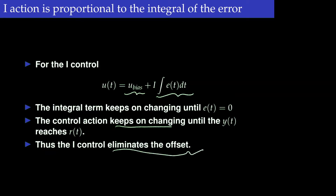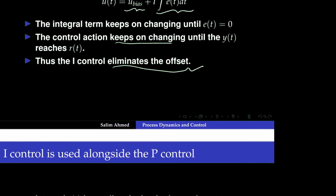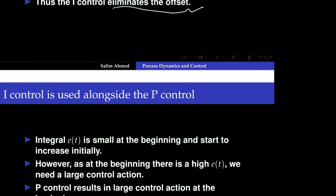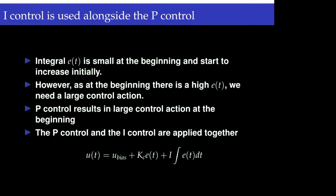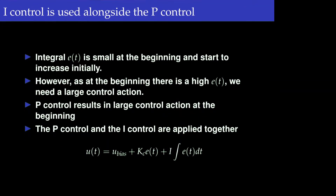The limitation of proportional control — always having an offset — can be overcome by using integral control. However, one issue with integral control is that the integral term is small at the beginning and starts to increase gradually.